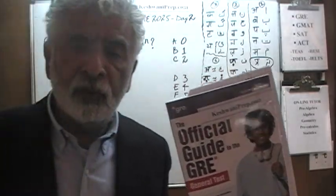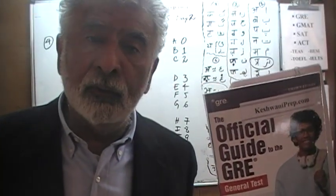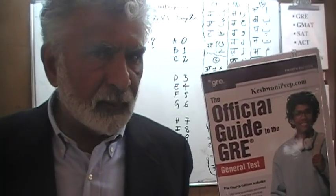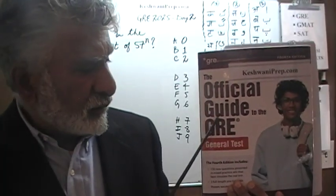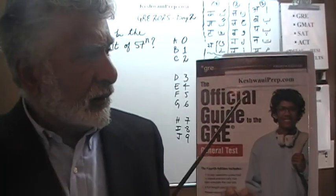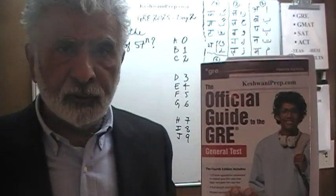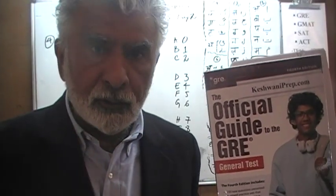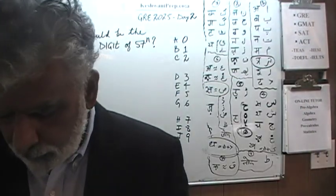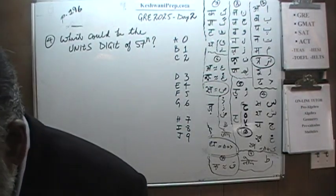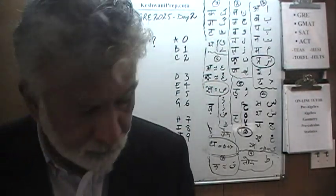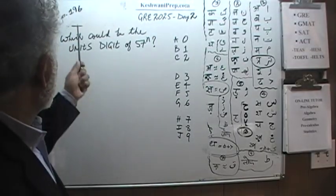We are here because we want to prepare for GRE. We have been solving math problems out of this book, the GRE Official Guide, 4th edition. If you do not own this book already, purchase one immediately — you are going to need it. Today, we will do problem number 4, which you will find on page number 196.